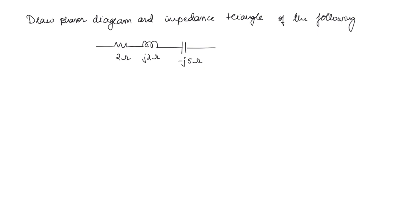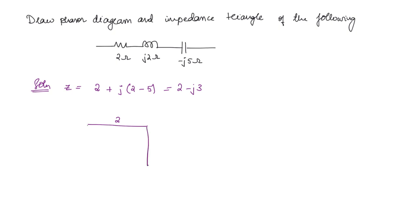Now we will do a simple problem: draw the phasor diagram and impedance triangle. First we find the impedance: the real part is 2, and the imaginary part is 2 − 5 = −3, giving Z = 2 − j3. For the impedance triangle, the base is 2; the imaginary part is negative so it's taken in the negative y-direction. The hypotenuse (magnitude) is √(2² + 3²) = √13 ≈ 3.605.